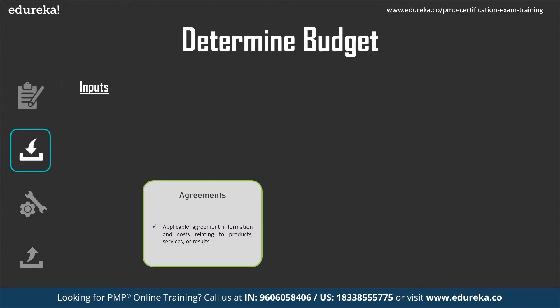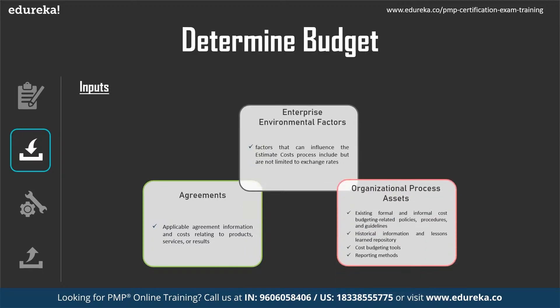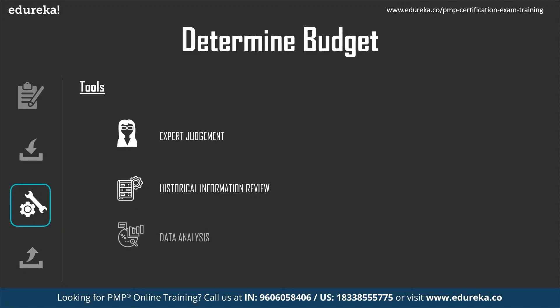Agreements are considered because you may be acquiring a specific product or service, or producing a product or service for your consumer — the terms under which the project is being worked must be understood. Enterprise environmental factors and organizational process assets are also inputs. Tools used for determine budget include expert judgment, historical information review, data analysis, cost aggregation, and funding limit reconciliation.